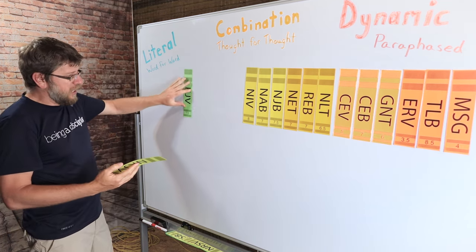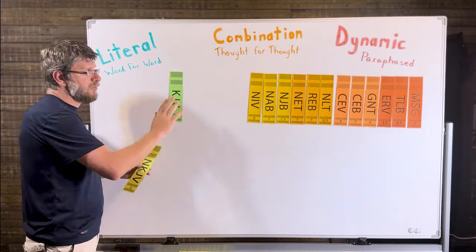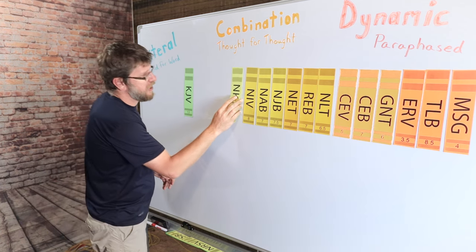And then in about 1983, they decided to update the King James to try to bring some of the language forward and create the New King James Version.